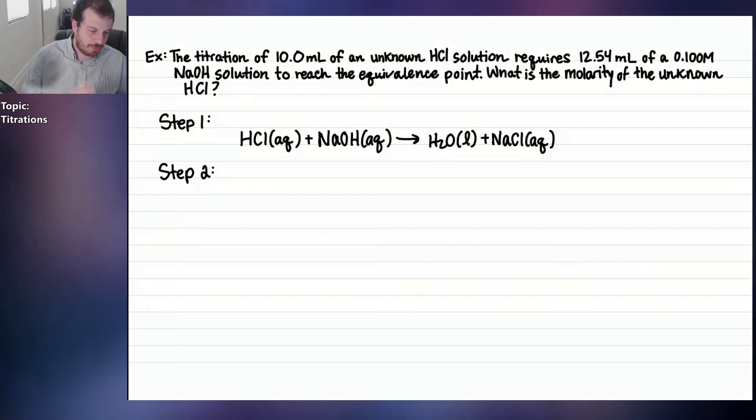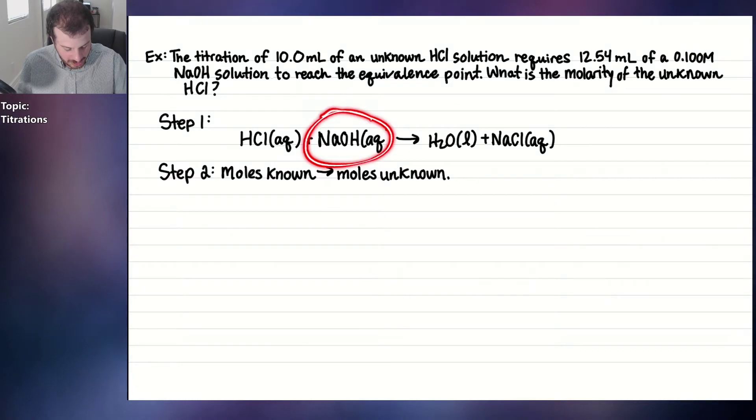Step two is you want to convert the moles of the known substance into the moles of the unknown substance. So moles of known into moles unknown. What is my known in this problem? Is my known the HCl or is my known the NaOH? Well, the problem says very clearly the HCl is the unknown. So that means NaOH is my known. Do I tell you the moles of NaOH? I do not. I tell you the volume of NaOH and the molarity of NaOH. So what information allows you to determine the moles of the known? It is the volume and the molarity. Remember, molarity is a relationship between volume and moles, but it is not itself moles.